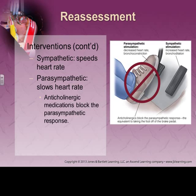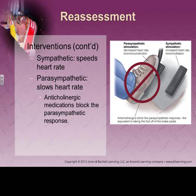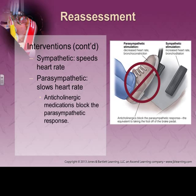An example of a medication we might give to work against the parasympathetic — think about SLUDGE and organophosphate poisoning — is atropine. An anticholinergic. Anticholinergics are going to dry things up. Some of the medications that limit secretions are going to be anticholinergic medications.